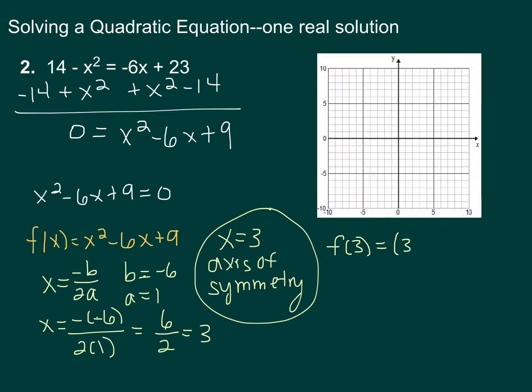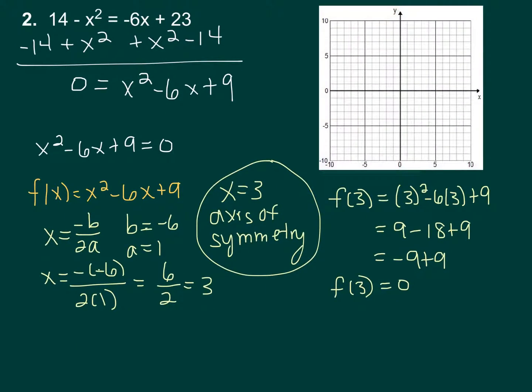Now let's plug that into our equation to figure out what the y-value of the vertex is. So we'll have 3² minus 6 times 3 plus 9. So that equals 9 minus 18 plus 9. 9 minus 18 is negative 9, plus 9 is equal to 0. So our vertex is actually an x-intercept. So our vertex—again, make sure you're writing down that this is the vertex—is 3, 0.